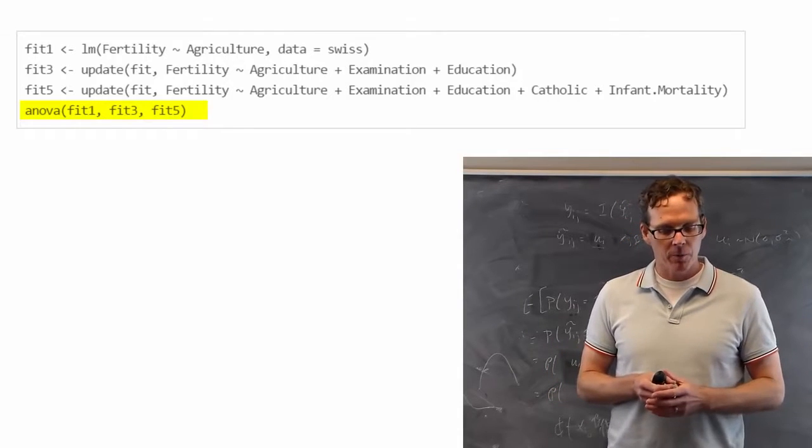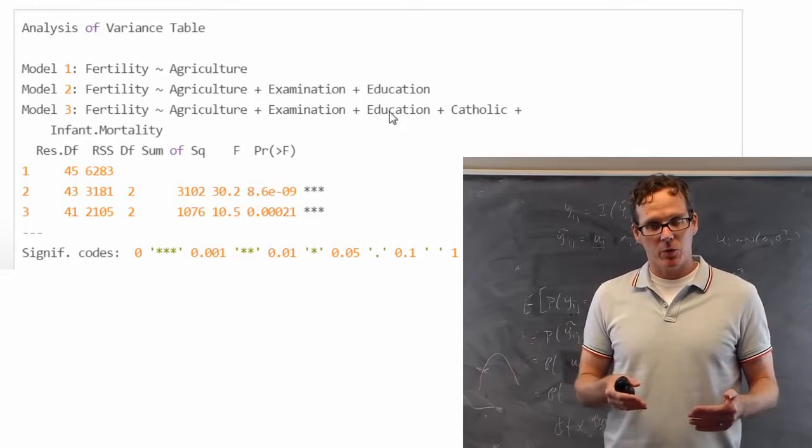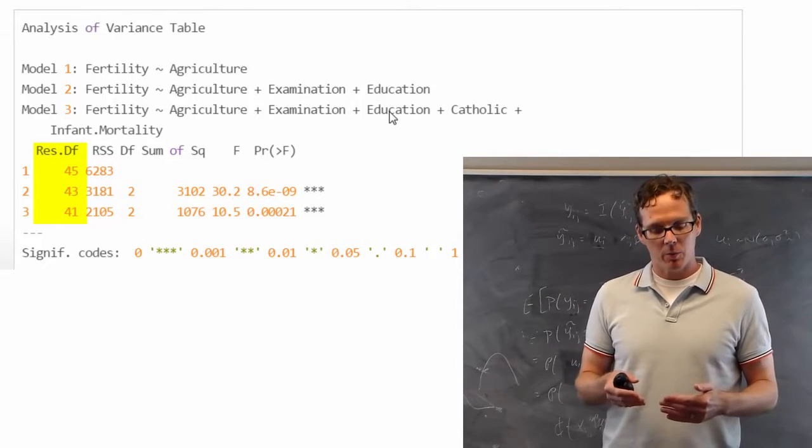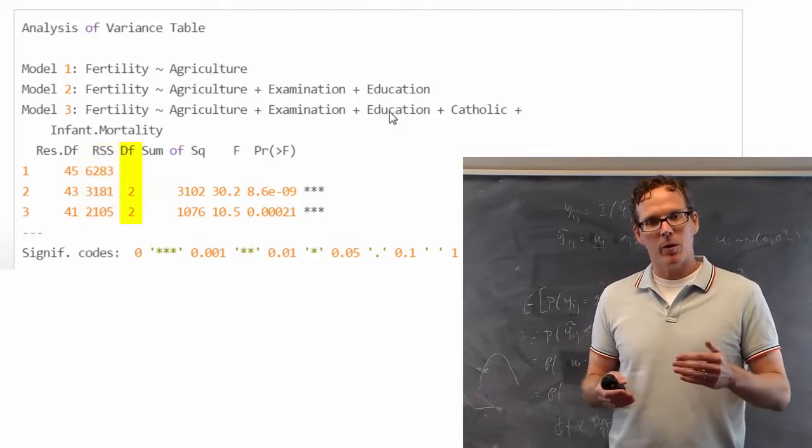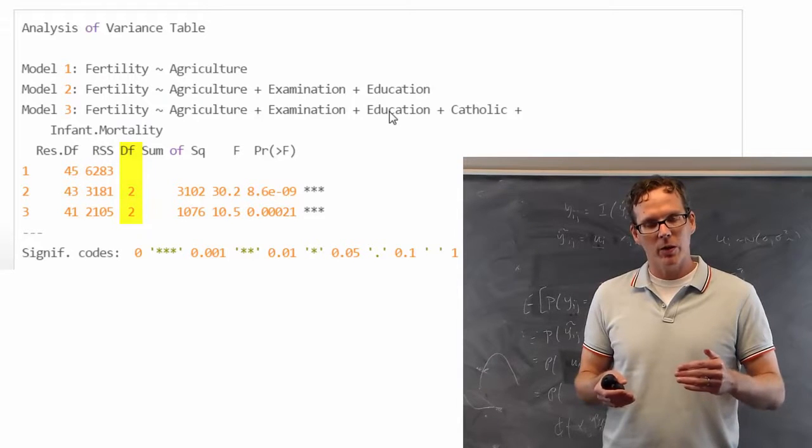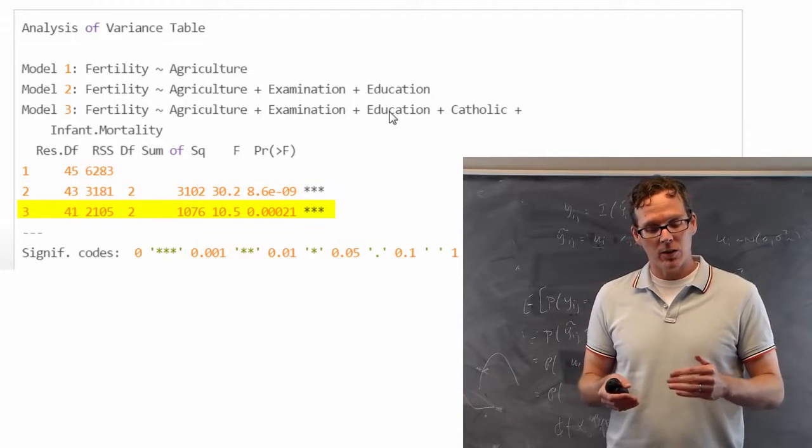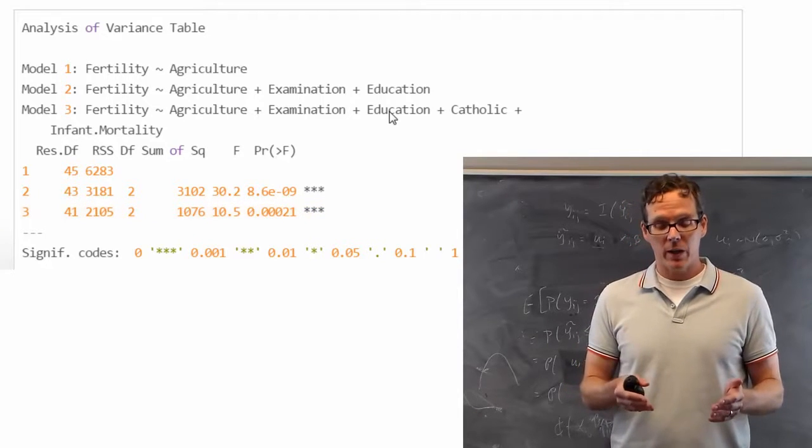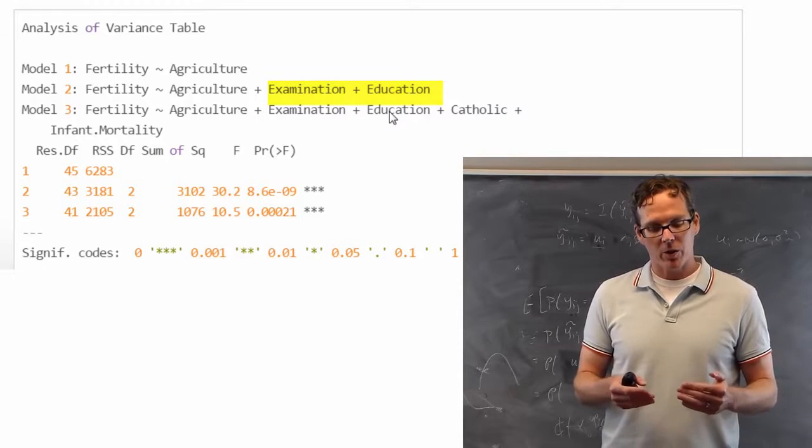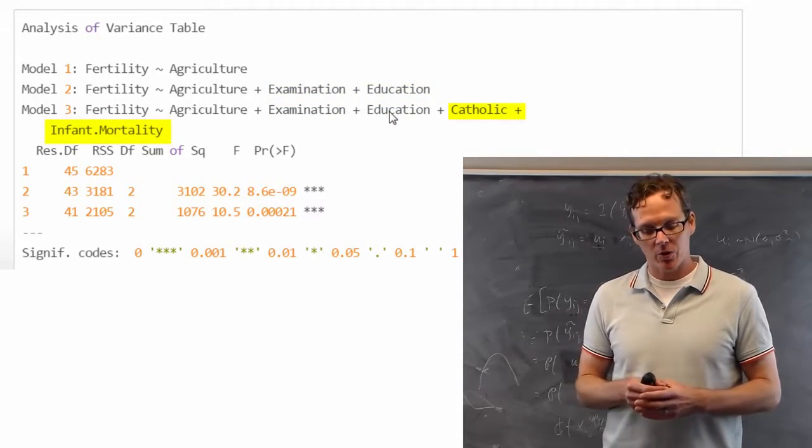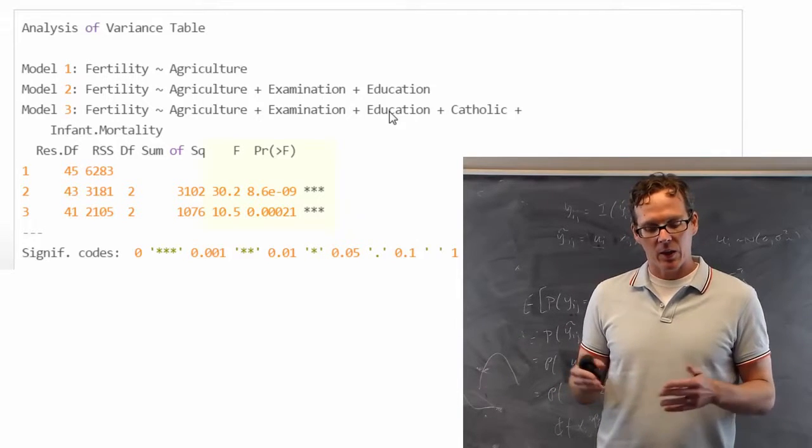That's what I named them: one, three, five. And then you see down here what you get is a listing of the models, model one, model two, model three, and then it gives you the degrees of freedom. That's the number of data points minus the number of parameters that it had to fit, the sums of squares, the residual sums of squares, and then the excess degrees of freedom of going from model one to model two, and then model two to model three. So we added two parameters in going from model one to model two. That's why that DF is two. And then we added two additional parameters going from model two to model three. So the two parameters we added from going from model one to model two is we added examination and education, their two regression coefficients. Going from model two to model three, we added Catholic and infant mortality, their two regression coefficients. So with this residual sums of squares and the degrees of freedom, you can calculate the so-called F statistic and thus get a P value.